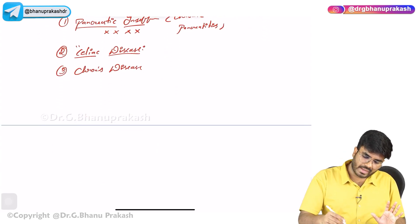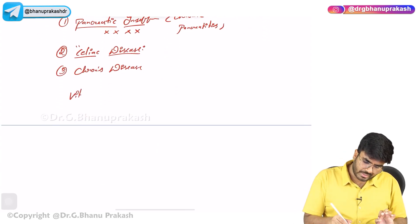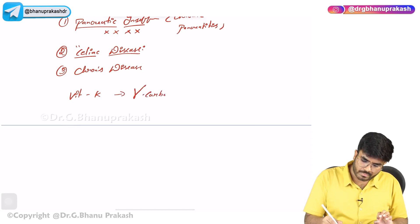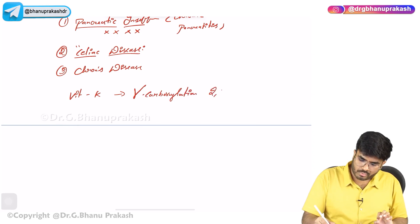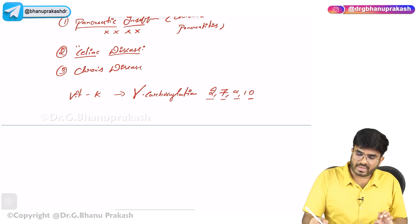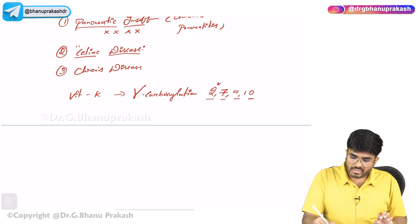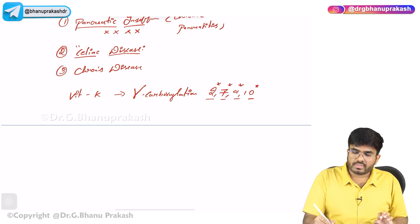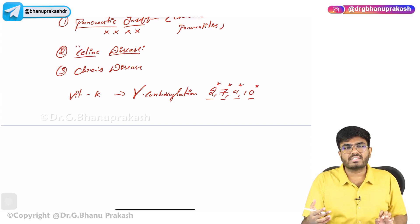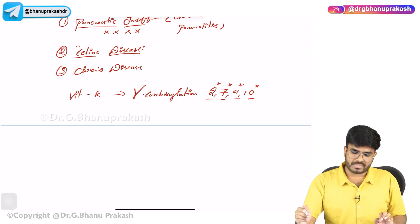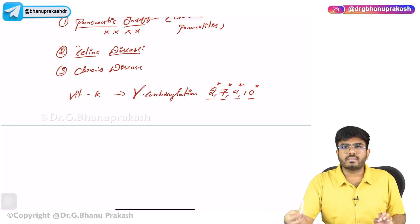Without vitamin K, gamma carboxylation of clotting factors 2, 7, 9, and 10 cannot occur. So these clotting factors are not going to be activated. Without these clotting factors, clotting cannot occur — causing disorders of secondary hemostasis. Vitamin K deficiency leads to deficiency of factors 2, 7, 9, and 10.